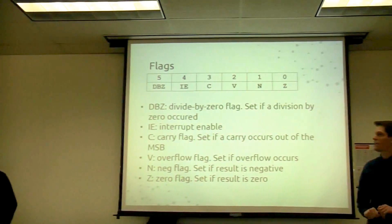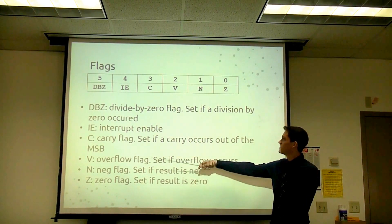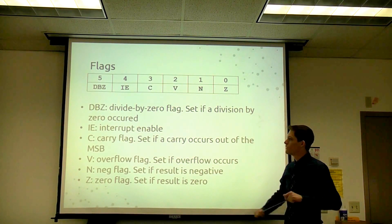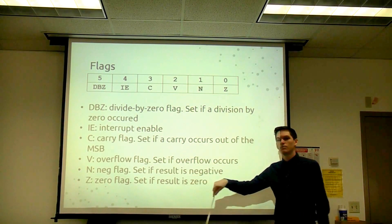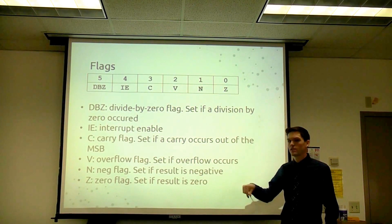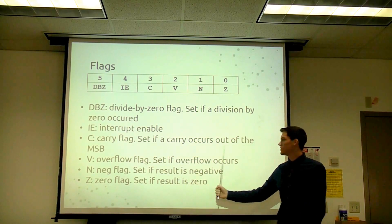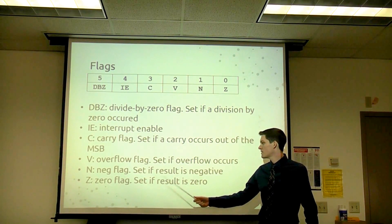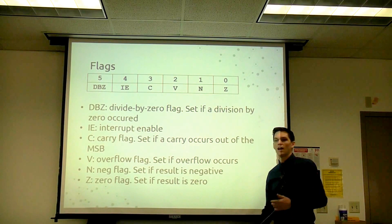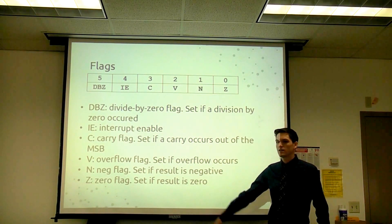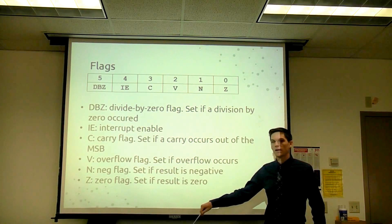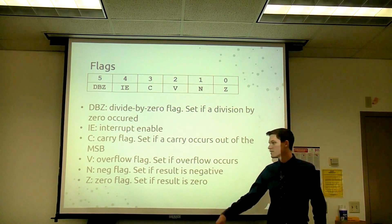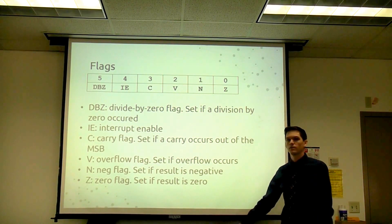For the flags register, we added a sixth flag — a divide by zero flag — set only in the division operation; every other operation sets it to don't care. The IE is the interrupt enable, only set in the set interrupt enable instruction — it flips the bit. The carry flag is set if carry occurs out of the most significant bit or borrowing in a subtract. The overflow flag is set if overflow occurs on unsigned operations — that maps to the carry flag. The negative flag is used only in signed operations, based on the most significant bit.